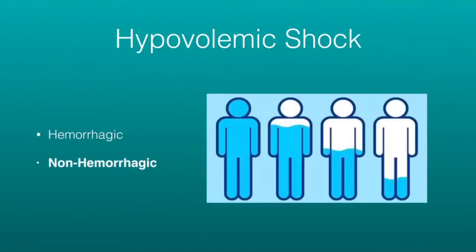Non-hemorrhagic shock is when we have lost too much volume due to something like vomiting, diarrhea, infection, or diabetic ketoacidosis — but for some reason we have lost volume without bleeding. So it's still hypovolemic shock, just the non-hemorrhagic or non-bleeding type.